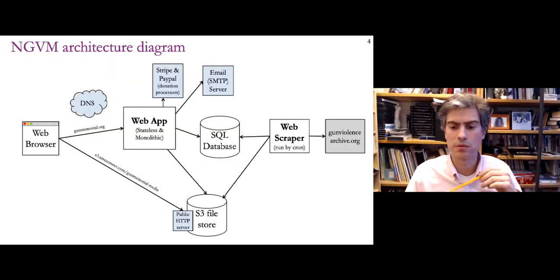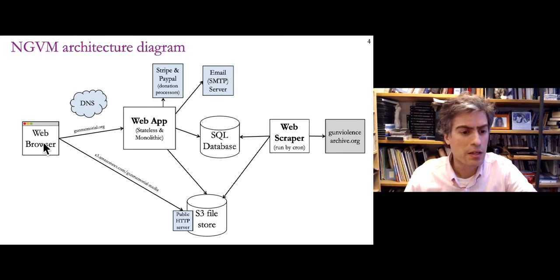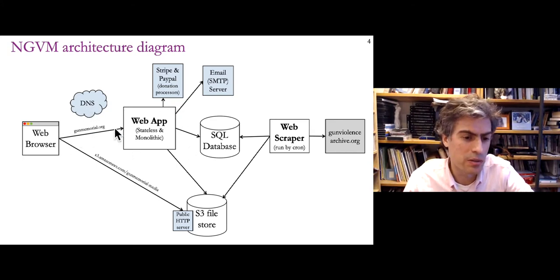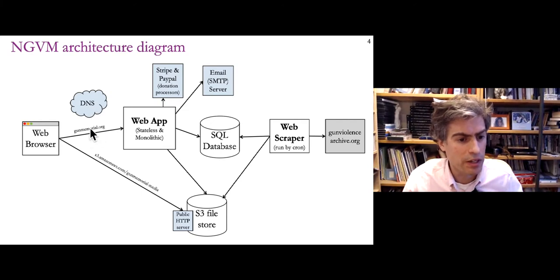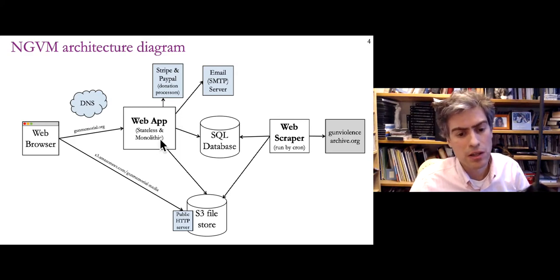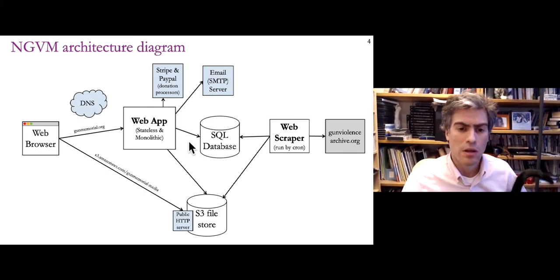At a high level, here is the architecture. On the left, a user using a web browser navigates to gunmemorial.org. DNS maps that hostname to an IP address — I need to configure DNS to give the correct IP for this hostname. Following that path, the main component controlling the application is this monolithic stateless web application, built in Java using JSP. This connects to several other components, but the bulk of the application is here.